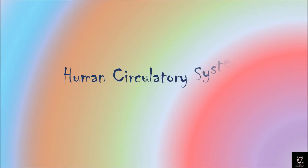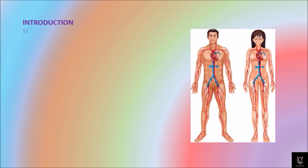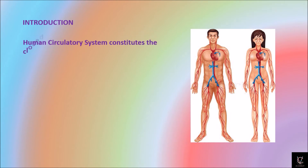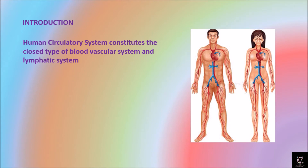In today's class we will discuss the Human Circulatory System. The Human Circulatory System consists of the closed type of blood vascular system and lymphatic system. There are two types of circulatory system: open type and closed type. Humans have the closed type of blood vascular system.